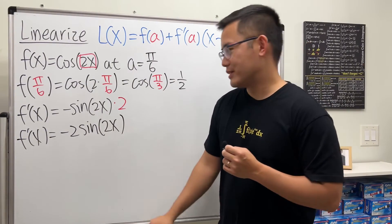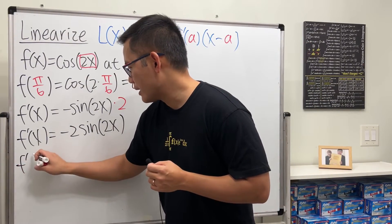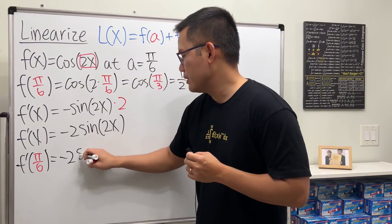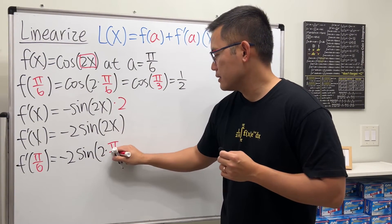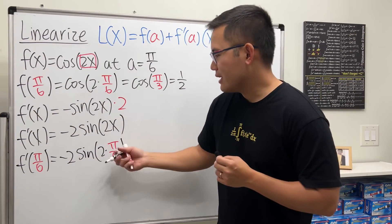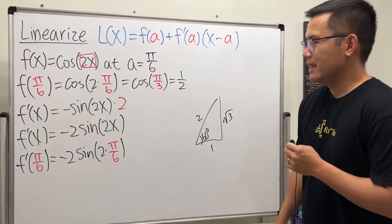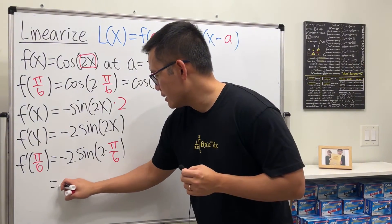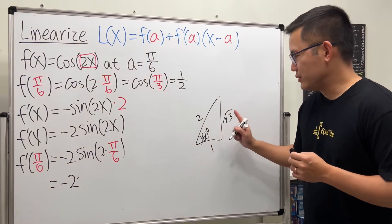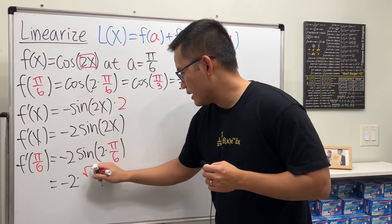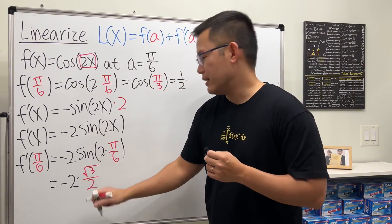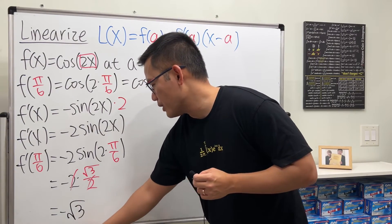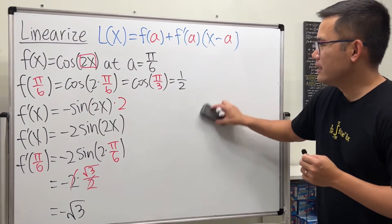Plug in pi over 6: f prime of pi over 6 equals negative 2 times sine of 2 times pi over 6, which is sine of pi over 3. From the special triangle, sine of pi over 3 is square root of 3 over 2. So we have negative 2 times square root of 3 over 2, and the two's cancel, giving us negative square root of 3.